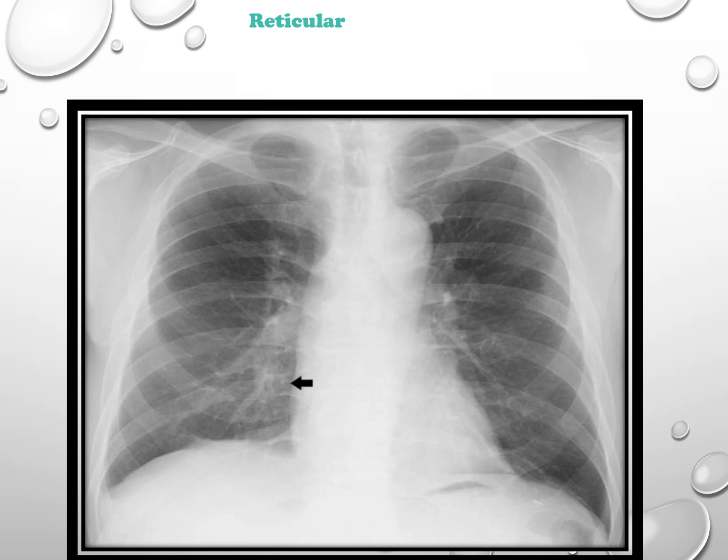This chest x-ray reveals tiny, granular, reticular shadows located in the lower right lung field. It is commonly found in conditions such as interstitial pulmonary fibrosis, collagen vascular disease, and asbestosis.